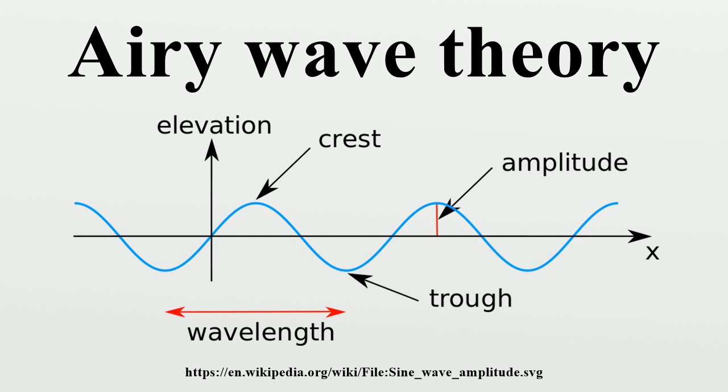The pressure above the free surface is assumed to be constant. This constant pressure is taken equal to zero, without loss of generality, since the level of such a constant pressure does not alter the flow.